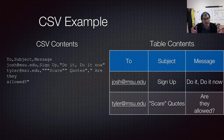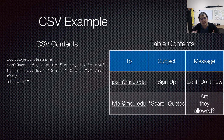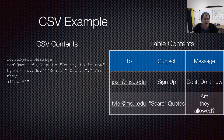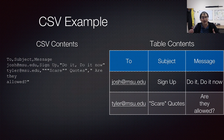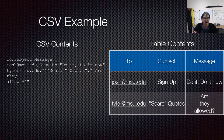You also have 'tyler@msu.edu'. The first double quote starts a string, then the next double quote is going to be escaped — so those three double quotes mean: the first one starts the string, the next two denote one real double quote, and then the last double quote closes the string. Another field reads 'are they allowed?' with each word on its own line, starting with a space. You can actually have newlines within quoted fields as well. And this is really the entirety of what a CSV file is.